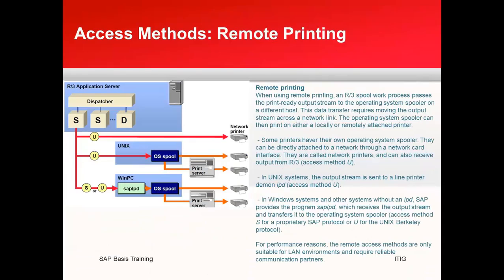In remote printing, the R3 spool work process passes the printer-ready output stream to the OS spooler running on a different host. Some printers have their own operating system spoolers and can be directly attached to the network through a network card interface. These are called network printers and can receive output from R3 — that is access method U. There is also method S, where the output goes to a Windows PC running the SAP LPD command. So you can send output to a UNIX printer, a Windows printer, or directly to a network printer.